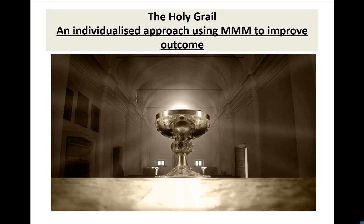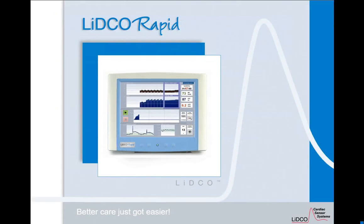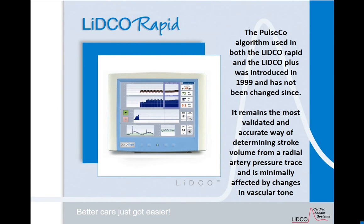The Holy Grail is an individualised approach using multimodal monitoring. What does it involve? First, a reliable flow monitor. I would say the LiDCO Rapid — the PulseCO algorithm introduced in late 1999 remains the most validated and accurate way of determining stroke volume from an arterial trace from the radial artery, and it's minimally affected by changes in vascular tone.